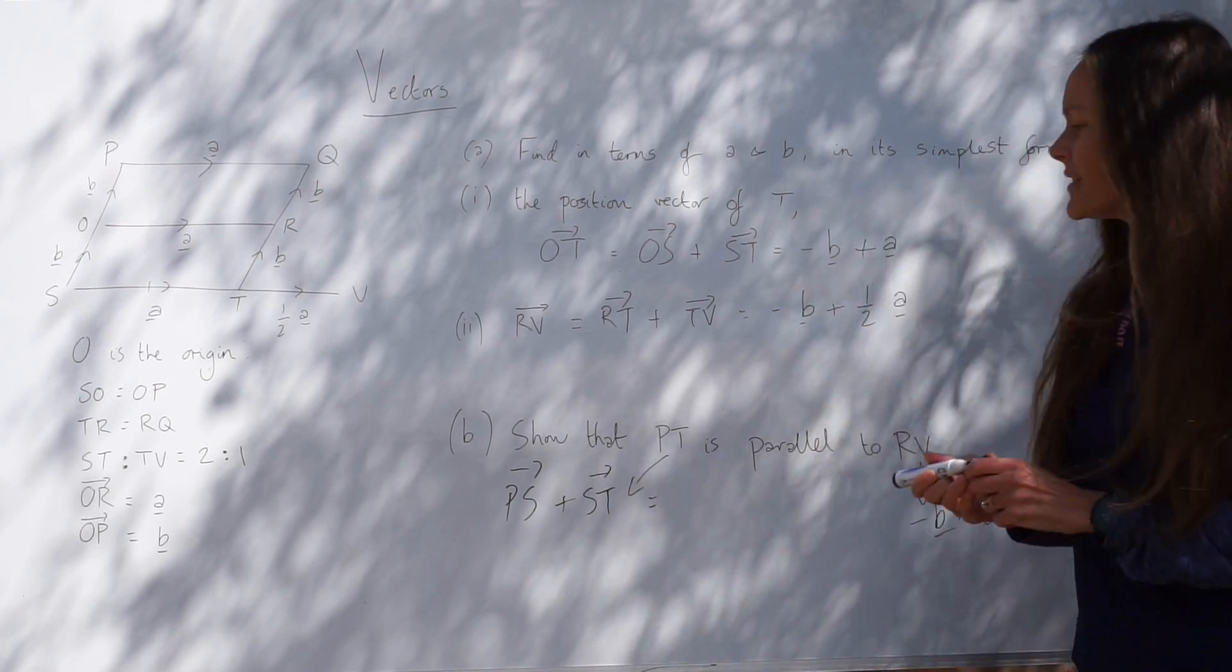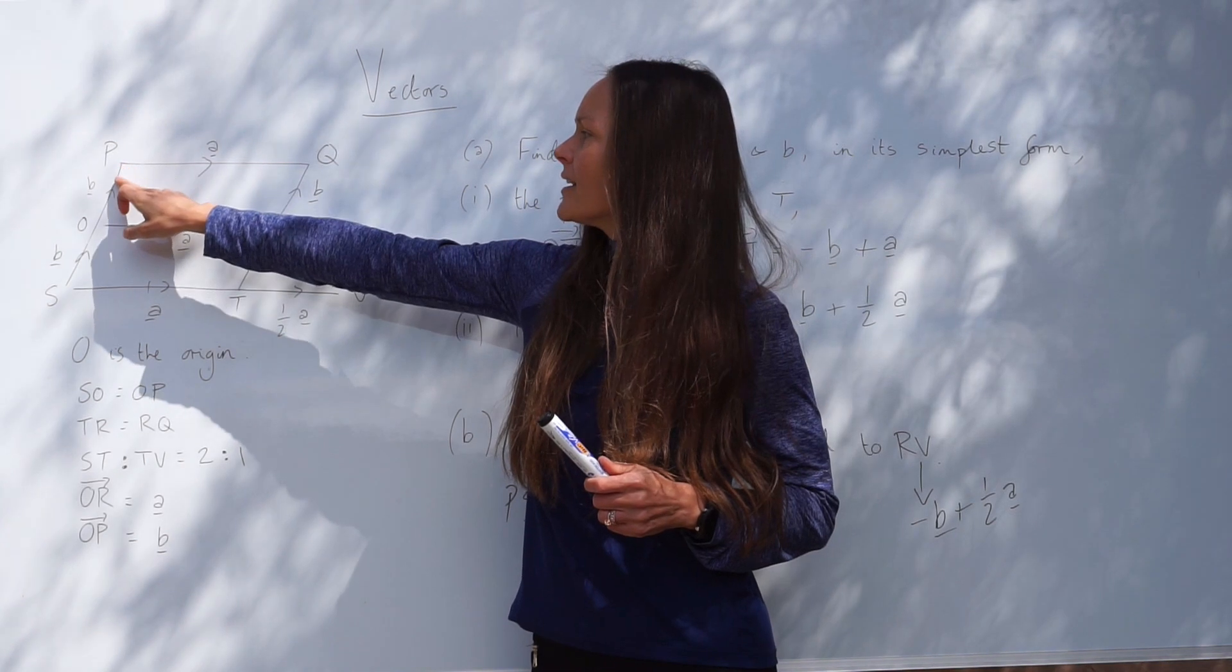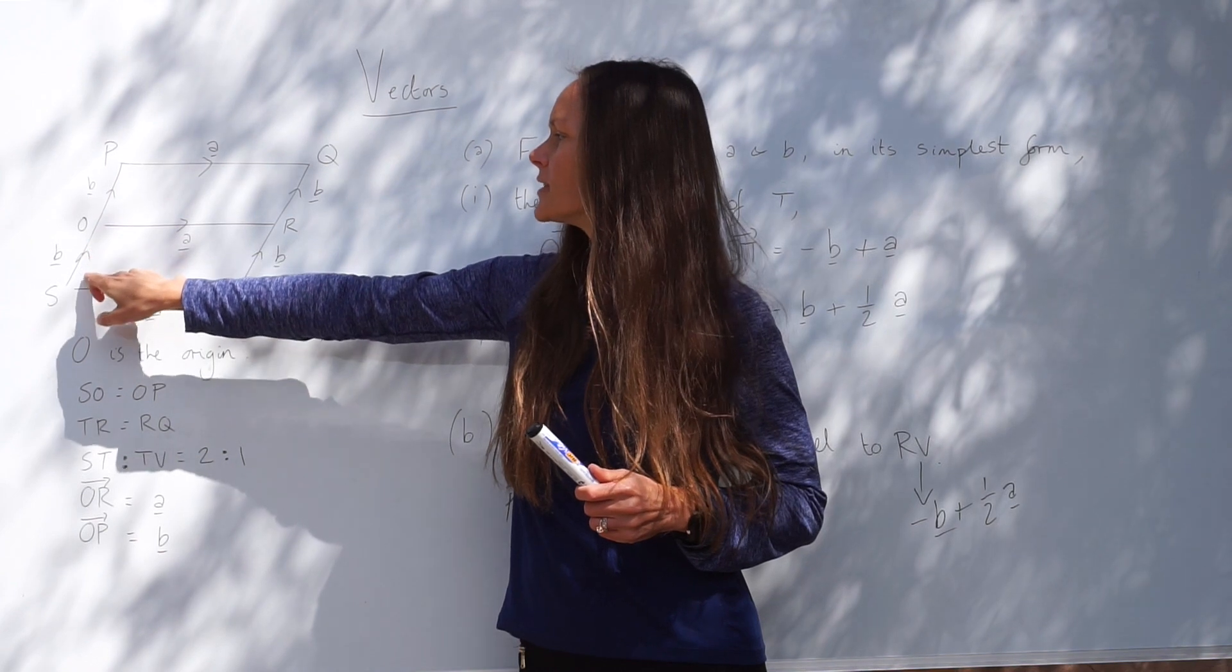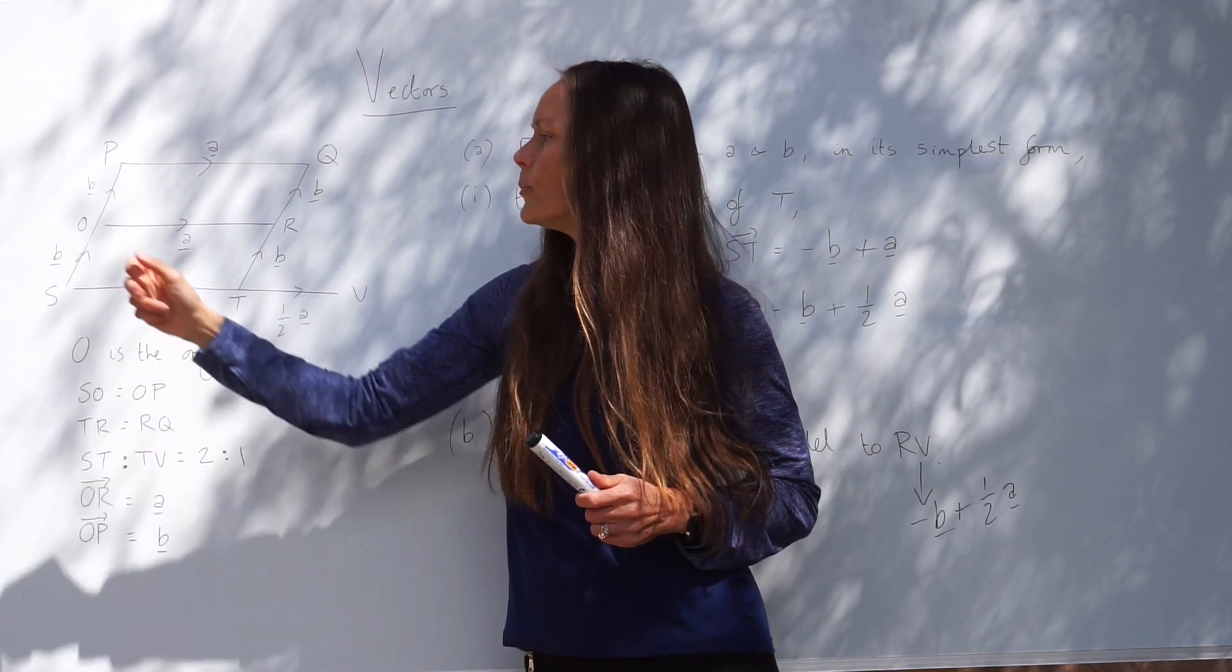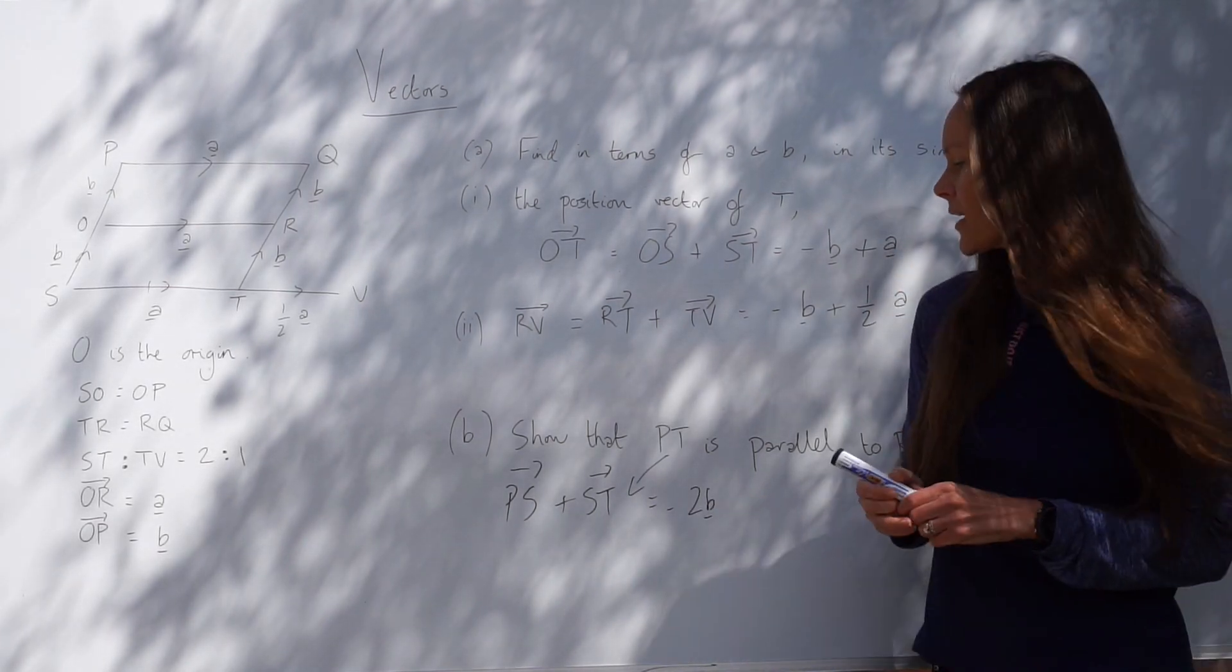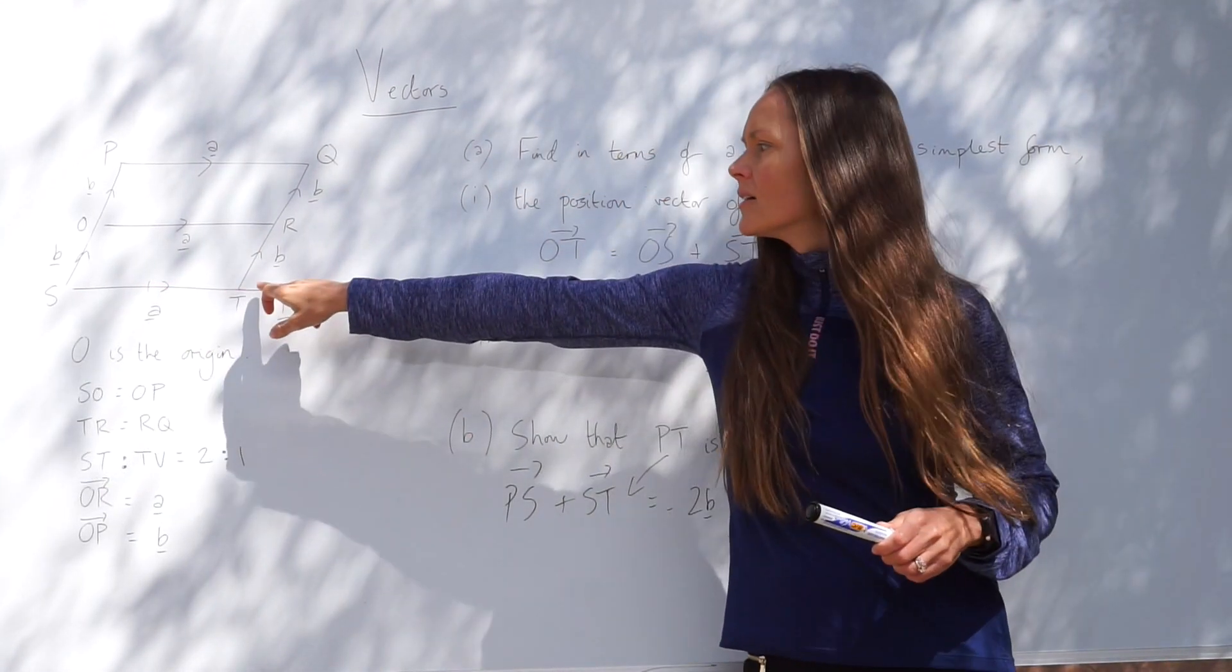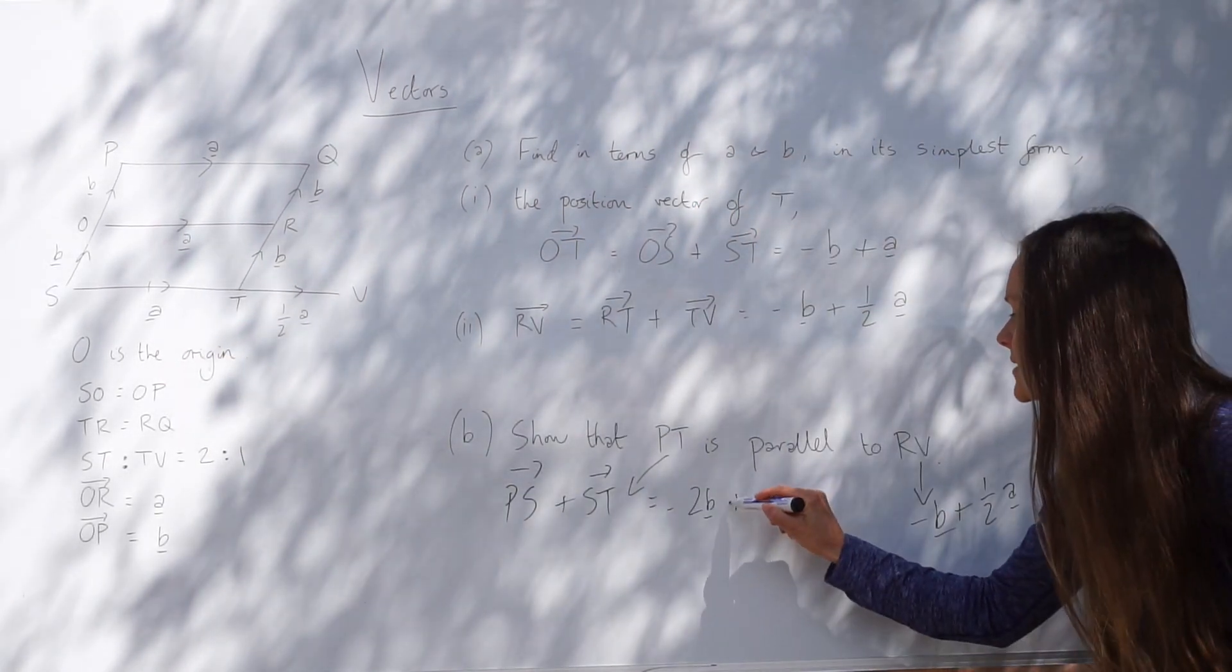So P to S, if you look carefully, we're travelling against the arrow of B two times. Here's vector B and another vector B. So it would be negative 2B for PS. Then, to get from S to T, well, that's just a nice straightforward one. It's just A. It's labelled here, vector A. So plus A.